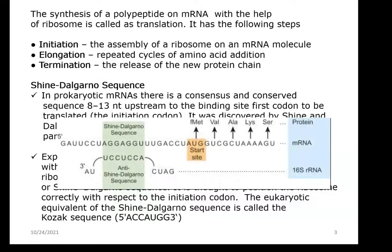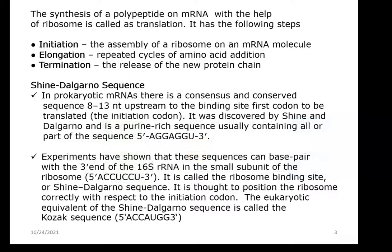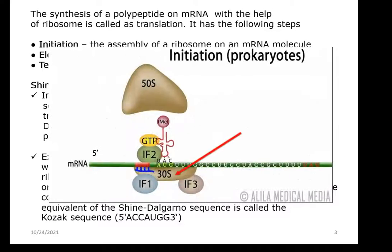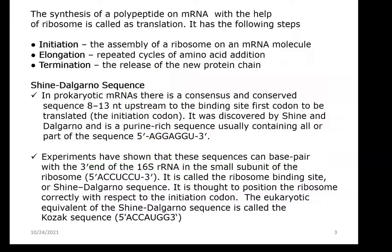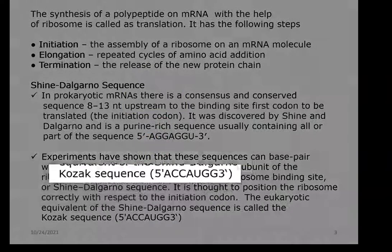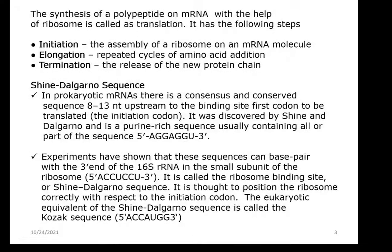Experiments have shown that these sequences can base pair with the 3-prime end of the 16S rRNA in the small subunit of the ribosome. It is called the ribosome binding site or Shine-Dalgarno sequence, and its function is thought to position the ribosome correctly with reference to the initiation codon in the mRNA. The eukaryotic equivalent of the Shine-Dalgarno sequence is called the Kozak sequence.